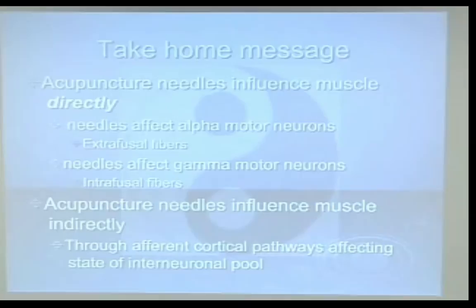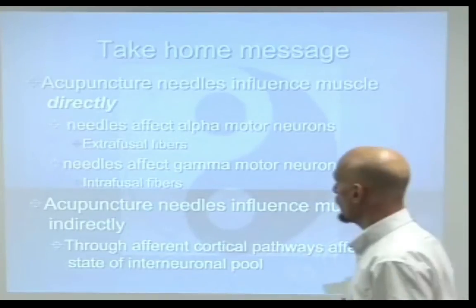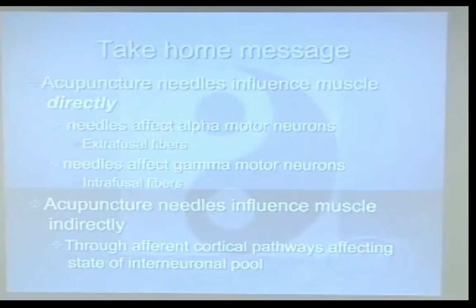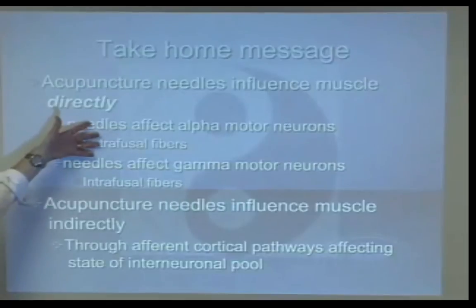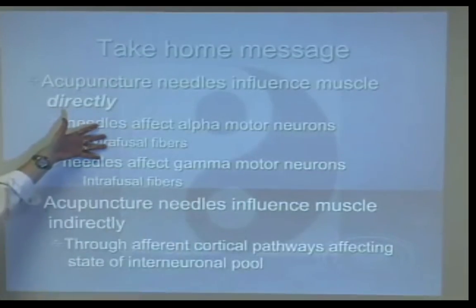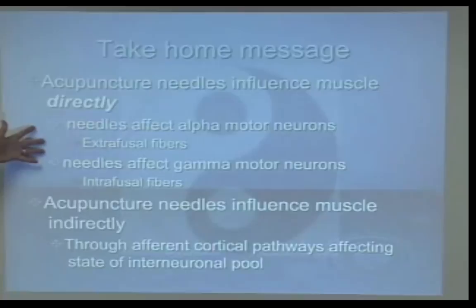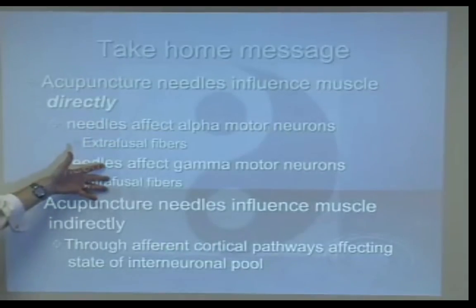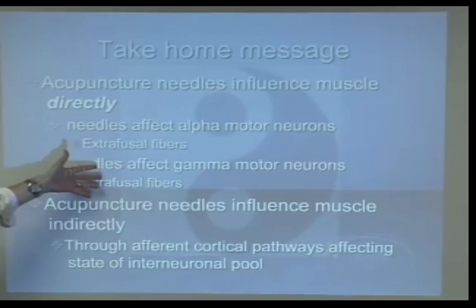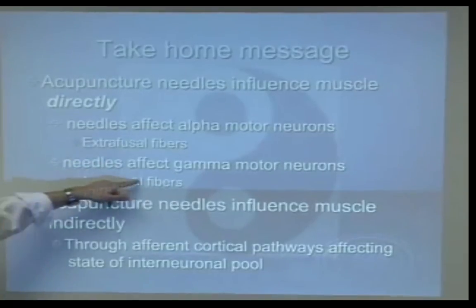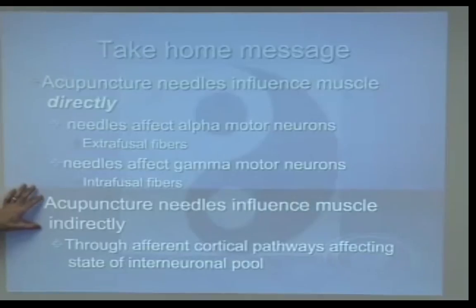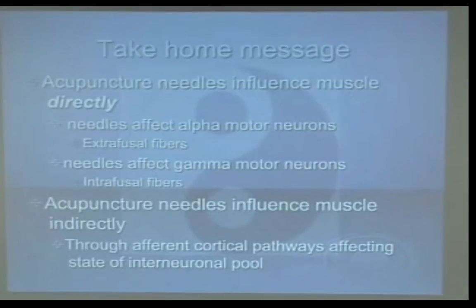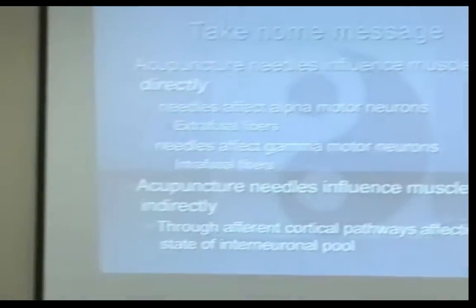Take-home message — this is the one page of this lecture you need to know. Acupuncture influences muscle directly. I stick a needle in — it can be through a motor point, through individual muscle fibers interrupting sarcomeres. It can affect the gamma motor neurons of the intrafusal fibers, either directly or indirectly by changing tone or by being literally in a muscle spindle. It also influences indirectly through the afferent cortical pathways — if I change the amount of input to the cortex, I change how excited or not excited that neuronal pool is.